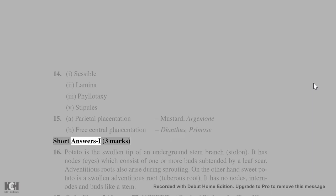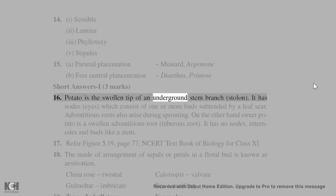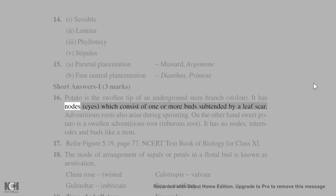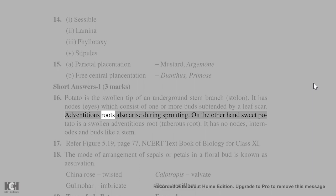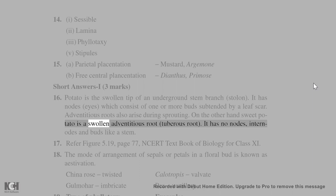Short answers (3 marks): 16. Potato is the swollen tip of an underground stem branch (stolon). It has nodes (eyes) which consist of one or more buds subtended by a leaf scar. Adventitious roots also arise during sprouting. On the other hand, sweet potato is a swollen adventitious root (tuberous root). It has no nodes, internodes, and buds like a stem.